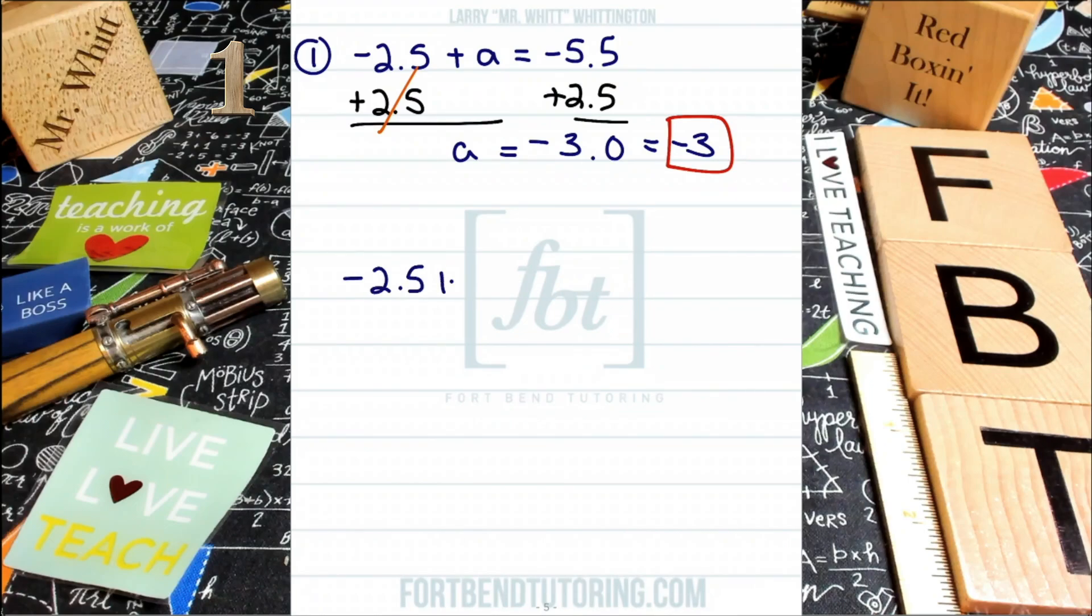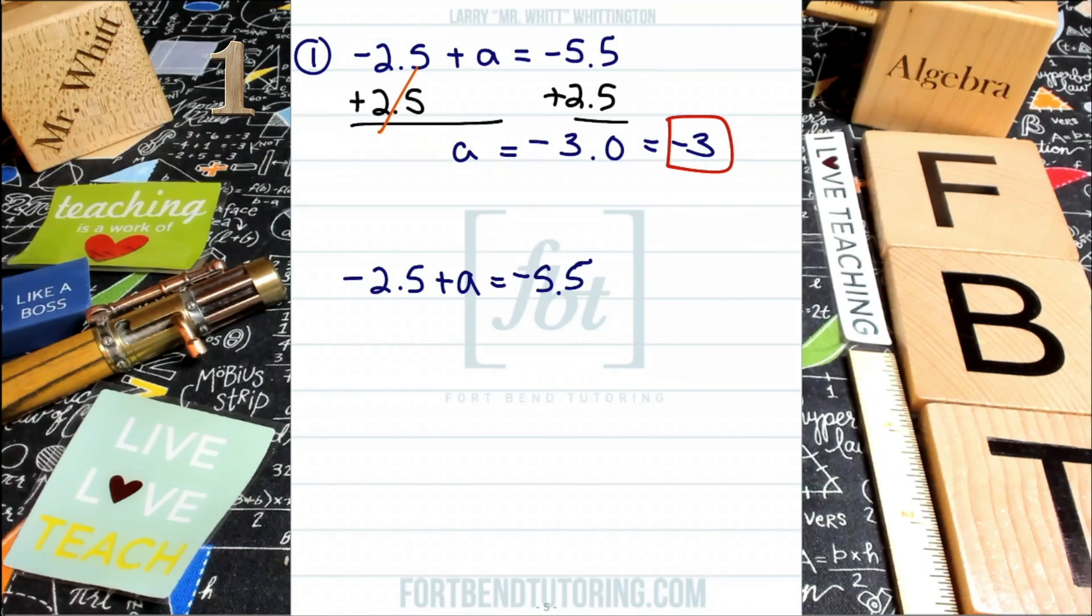So if we have the negative 2.5 plus A equals negative 5.5, another technique, guys, is to eliminate all of the decimals. And for that, you're going to have to pay attention to the smallest place value. So what do I mean by that? I mean like the place value to the right of the decimal. That first one is the tenths place. Then two places from the decimal is the hundredths place. Then the thousandths place and so forth and so on. So that's what I mean about place value. So when you're looking at this problem here, your smallest place value is just 1 to the right of the decimal. So that's going to be the tenths place.